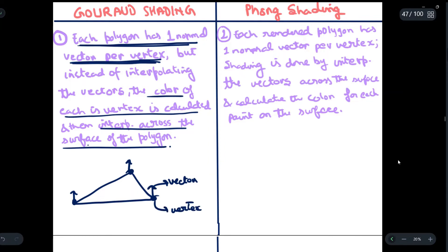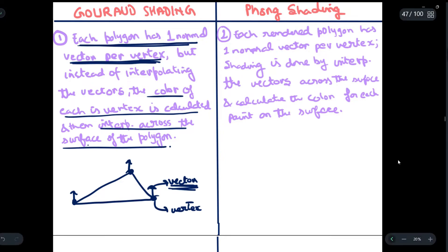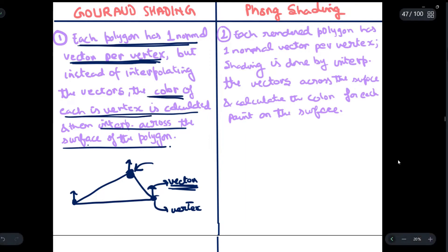In Gouraud shading, we will be interpolating the intensity values that are calculated, instead of interpolating the vectors. We find out the intensity values at these vertices, then we use those intensity values and interpolate them across the surface of the polygon. The color of each vertex is calculated and then interpolated across the surface. The intensity values IV are interpolated across the surface to find out the color at each point.